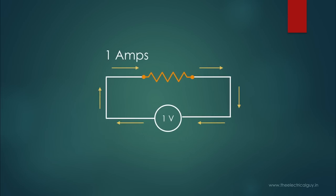We know that when we apply voltage to a circuit — and by circuit I mean a closed path — electrons start flowing through that circuit. Now definitely, when these electrons are flowing through this circuit, some work is being done to move electrons. This work done in moving electrons in unit time is what we call as electric power.